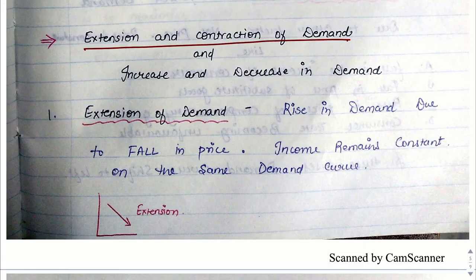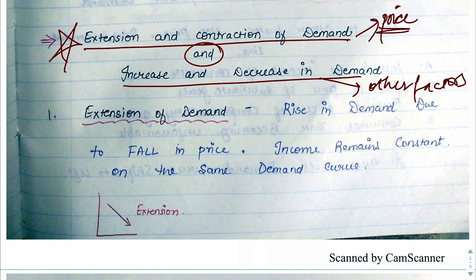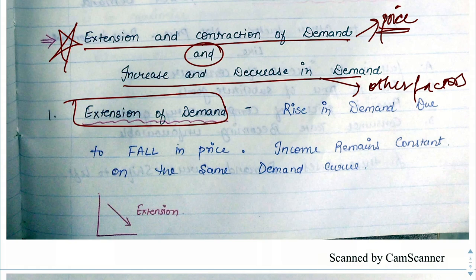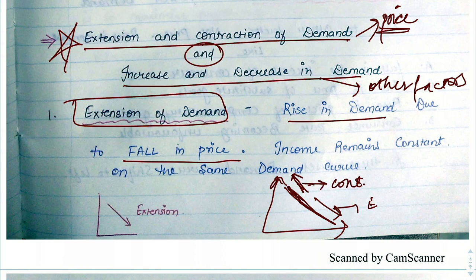Next comes extension and contraction of demand versus increase and decrease in demand — this is important and has been asked in the exam. Extension and contraction of demand happen due to price changes. If price decreases, demand increases — this is extension of demand, moving down the same demand curve. If price increases, demand decreases — this is contraction, moving up the same demand curve.